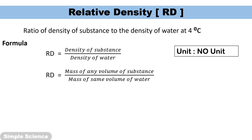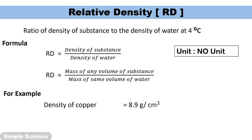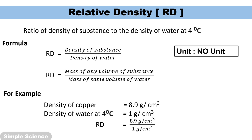If the question asks for the SI unit of relative density, the answer is no unit. For example, density of copper is 8.9 gram per centimeter cube and density of water at 4°C is 1 gram per centimeter cube. Relative density of copper = 8.9 / 1 = 8.9 (no unit). This means the relative density of any substance equals its density value in CGS units. So if relative density is given, that is the same as density in gram per centimeter cube.